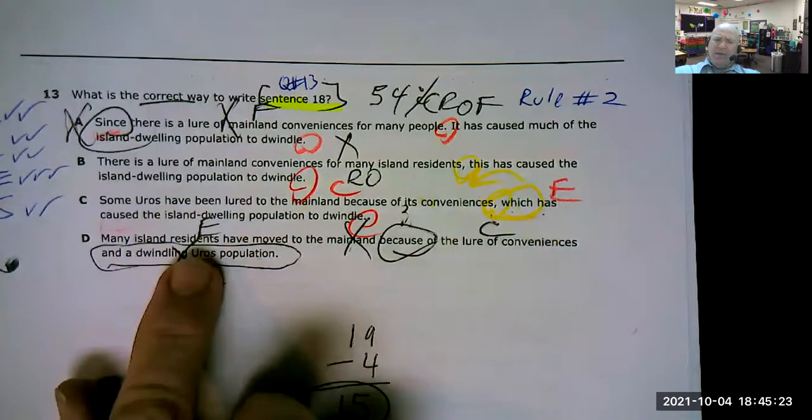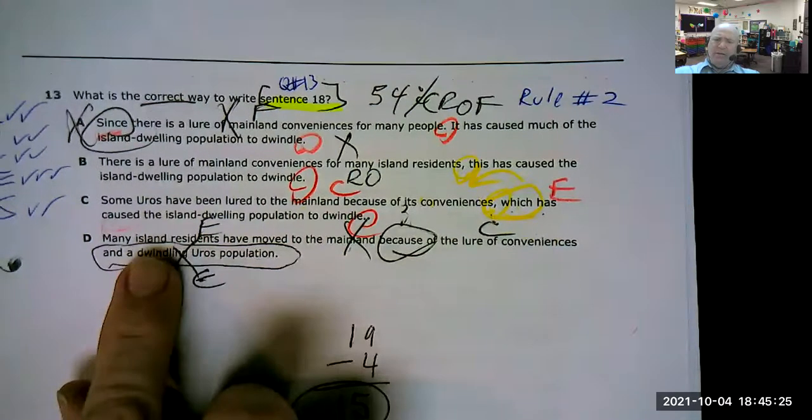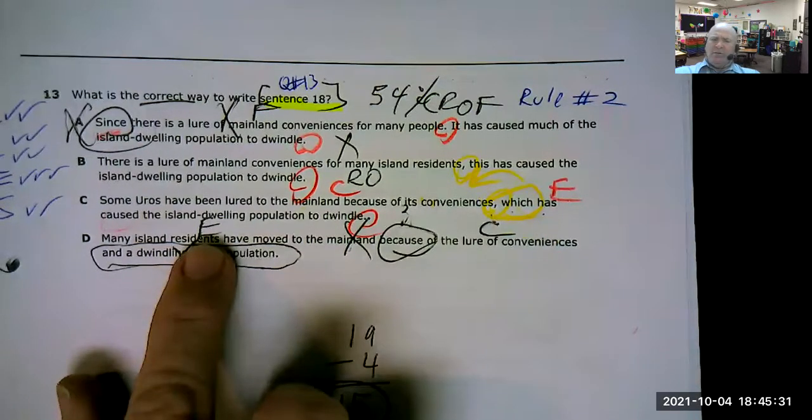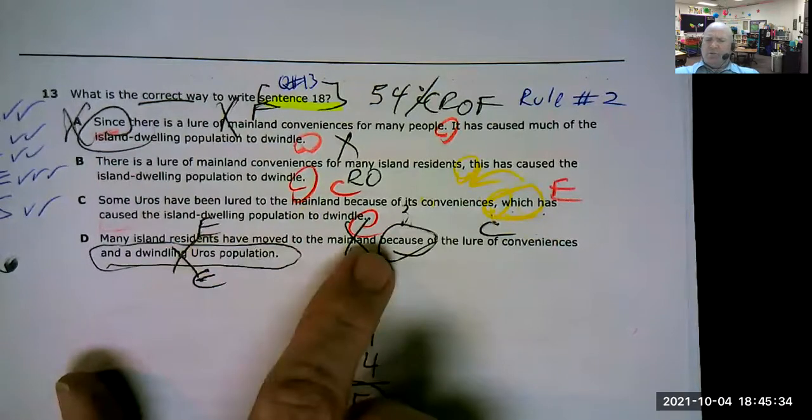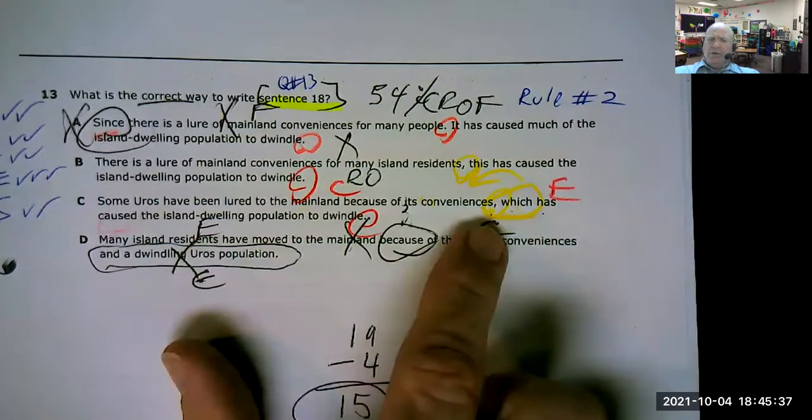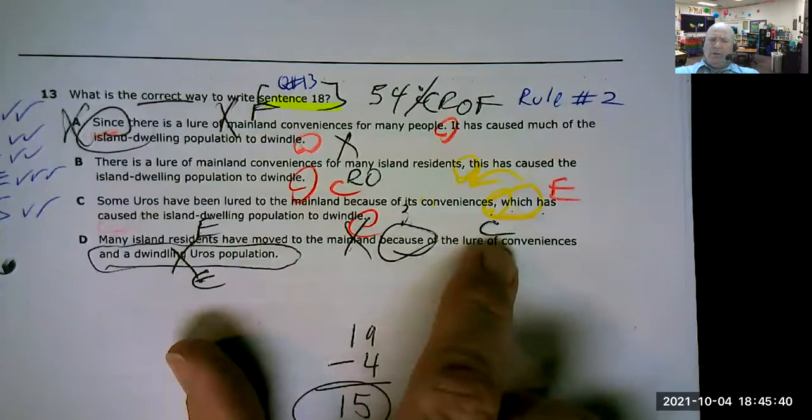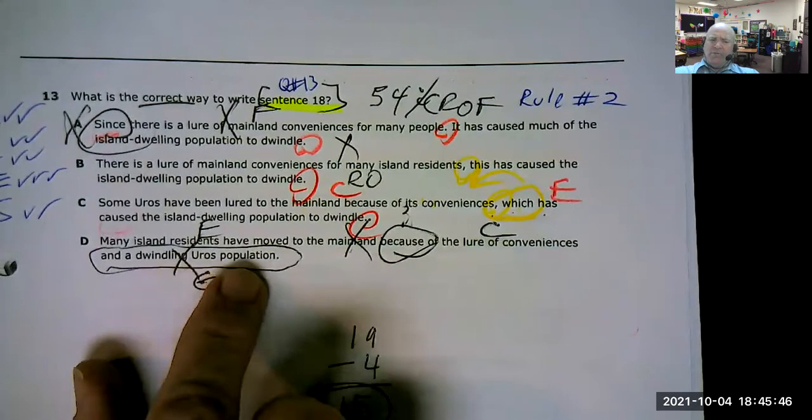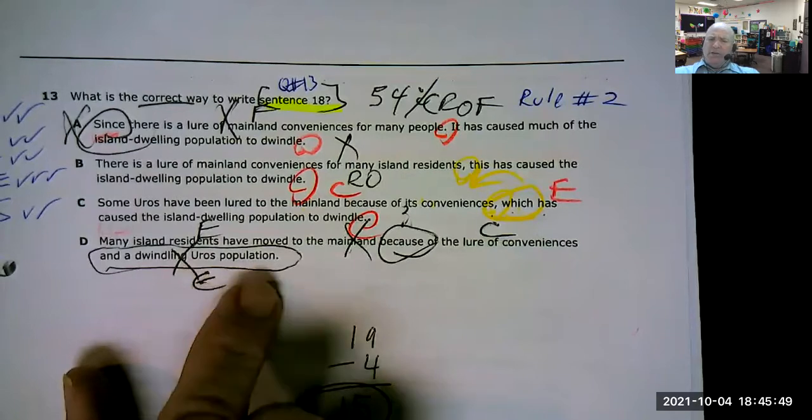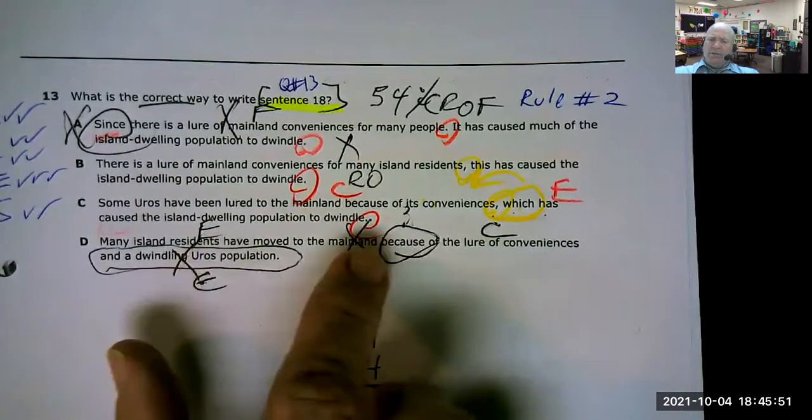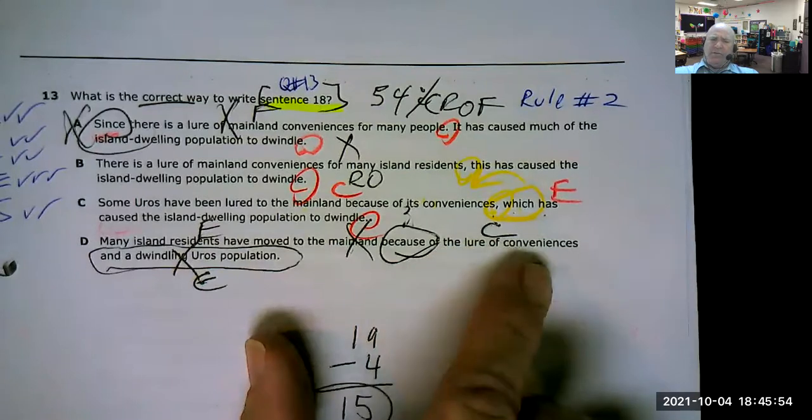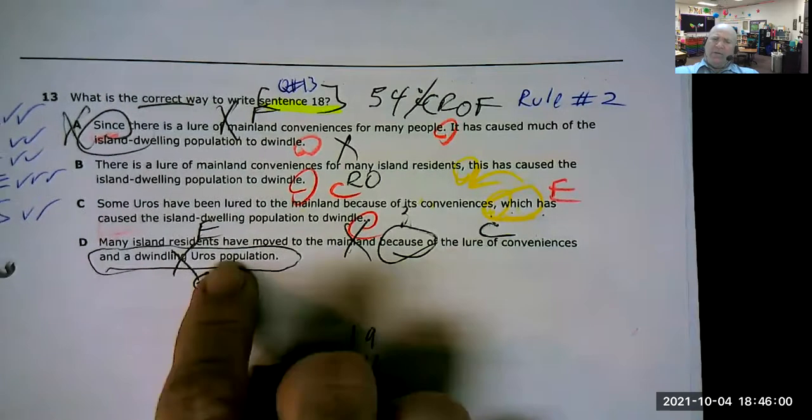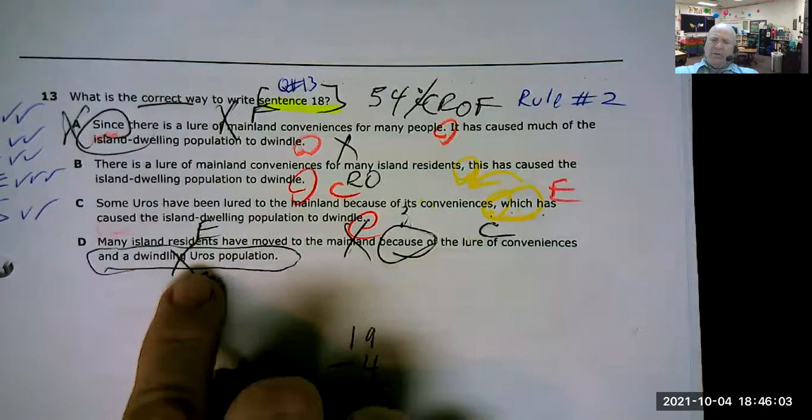Let's look at letter D so we can compare the only two that are left. Capital. Many island residents have moved to the mainland. That's an effect. Because of the lure of conveniences. That's true. That's a cause. And the dwindle dwindling Uros population. No. This effect should be over here because it was only the lure of the conveniences, not because of the dwindling population. That's an effect that has happened because of the lures of the conveniences.